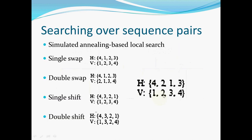After the introduction of these different methods, what remains is to search over all the sequence pairs in order to come up with a good one. To search over the sequence pairs, we use the simulated annealing-based local search, which conducts single swap, double swap, single shift, and double shift in order to find the best sequence pair.